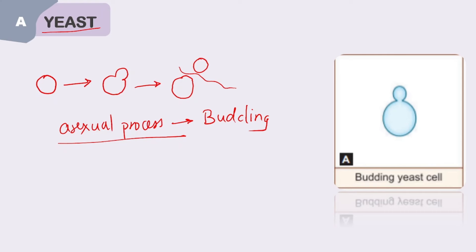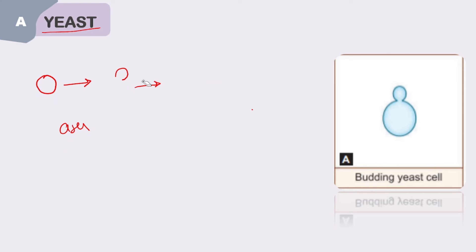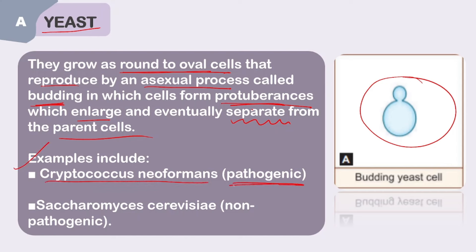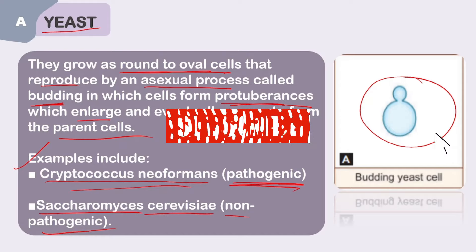From the image we can clearly see a budding yeast cell. These are round to oval cells that reproduce by the asexual process of budding. The cell forms a protuberance which enlarges and eventually separates from the parent cell. Examples include Cryptococcus neoformans (a pathogenic species, studied in detail under cryptococcal meningitis) and Saccharomyces cerevisiae (a non-pathogenic organism).